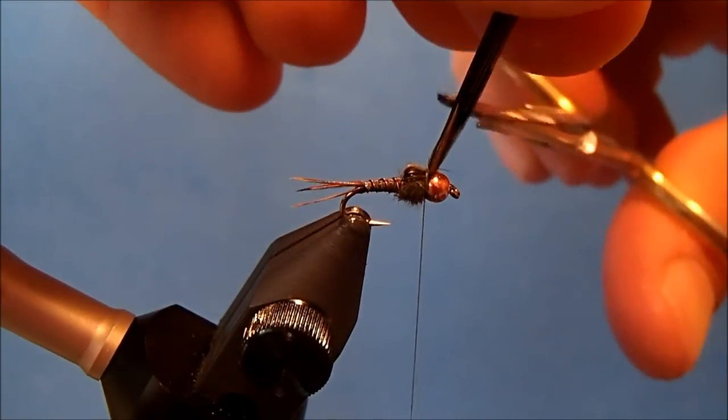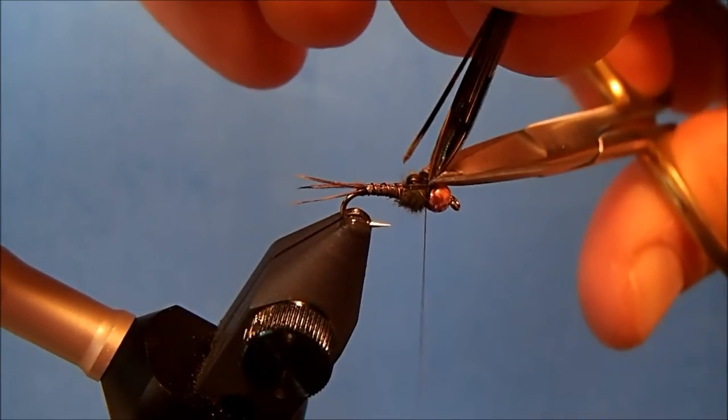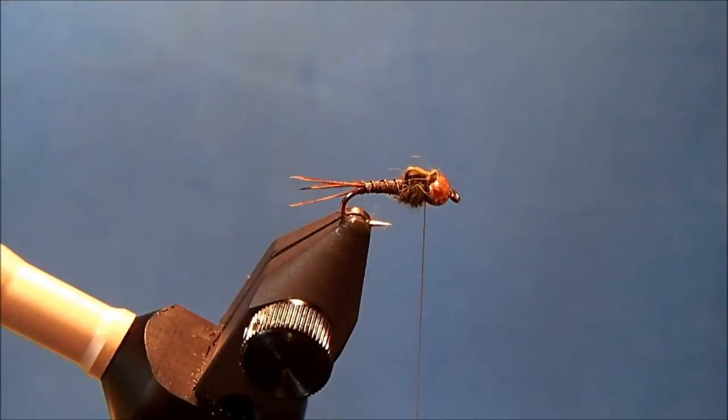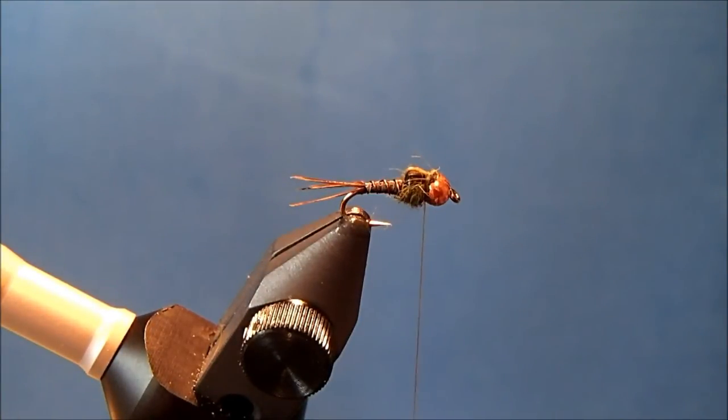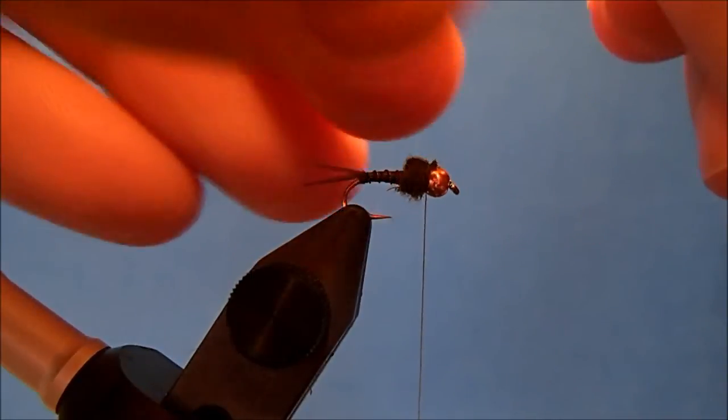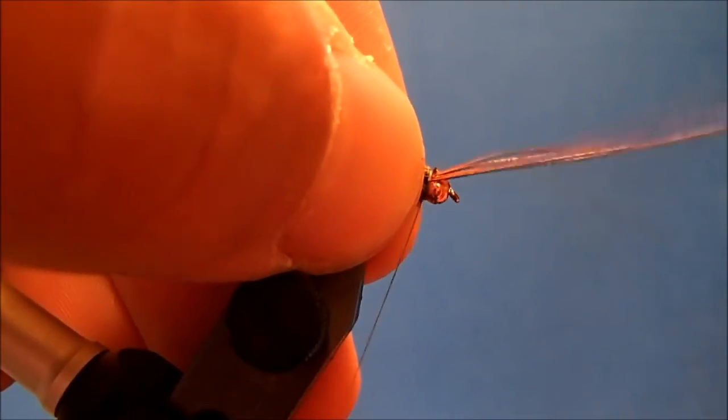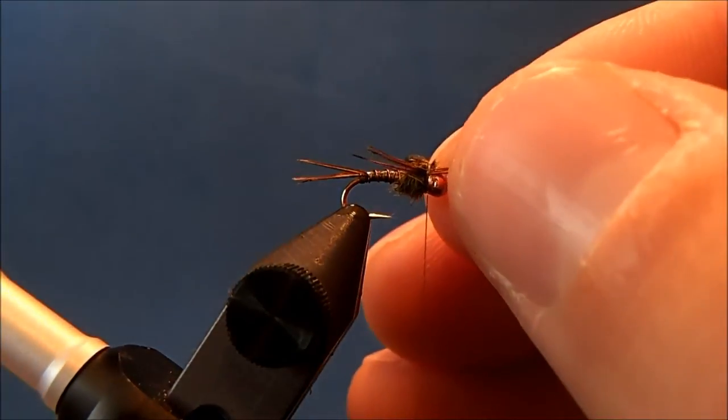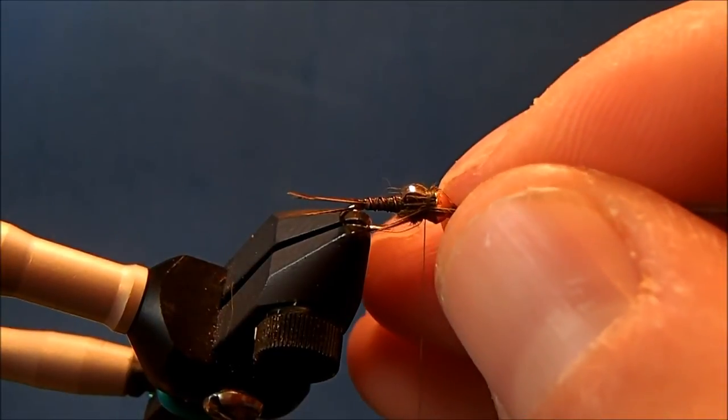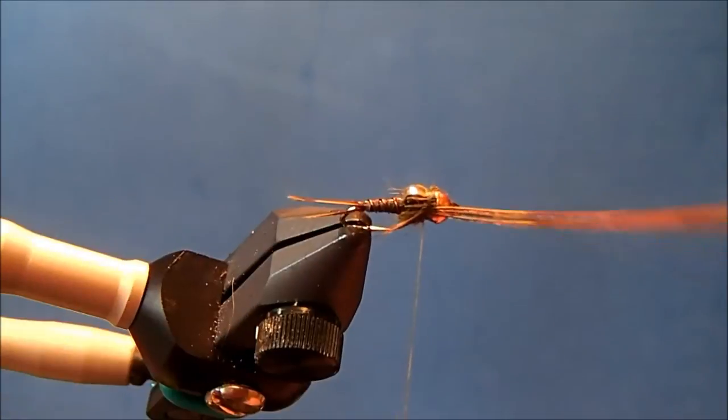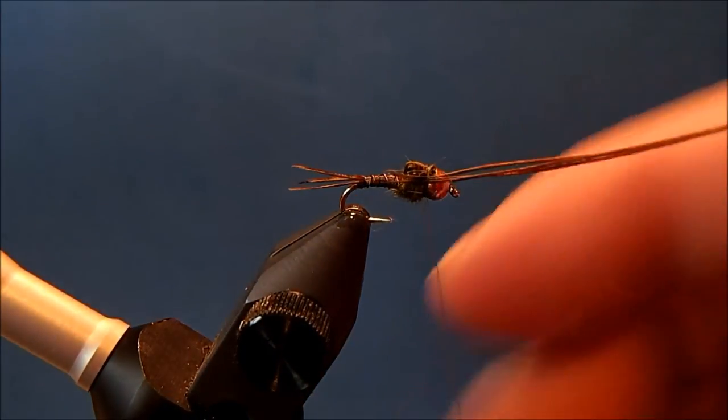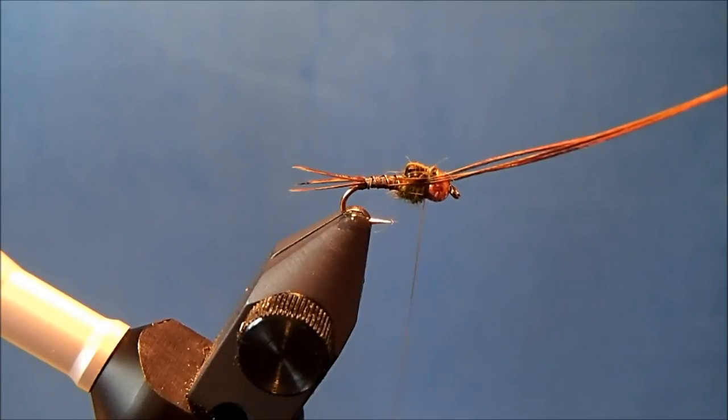Keep a hold of your pheasant tail fibers because you're going to use those tip sections for the legs. Now I've got three for each side. I'll hold them up against the side. I'm not worried about length at this point—I just want to get them in. I'll take two wraps, then pull them back to get them to the length I'm looking for. I want to keep them just a little bit beyond that thorax.